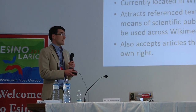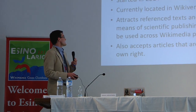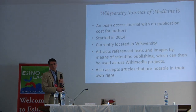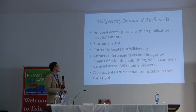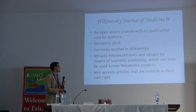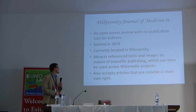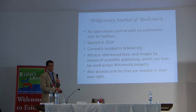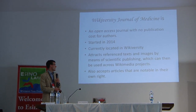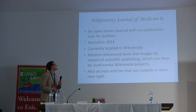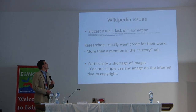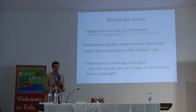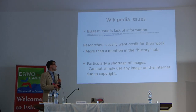This journal attracts reference text and images by means of scientific publication, which can then be used across Wikimedia projects. It also accepts articles that are notable in their own right. The journal is meant to help Wikipedia with some issues.